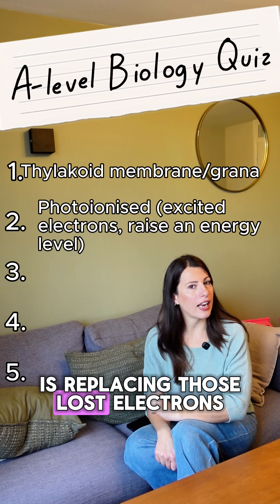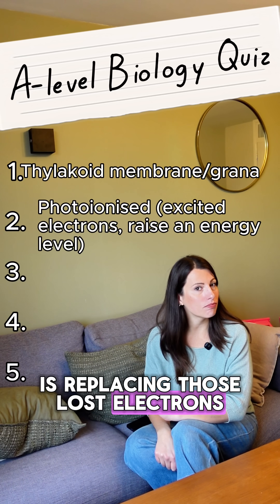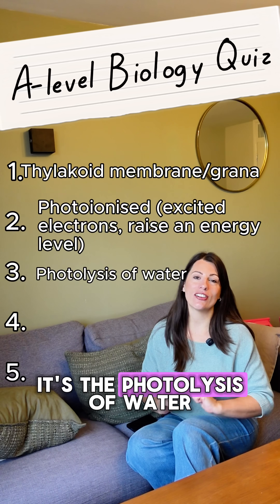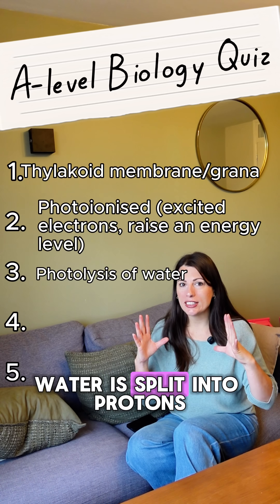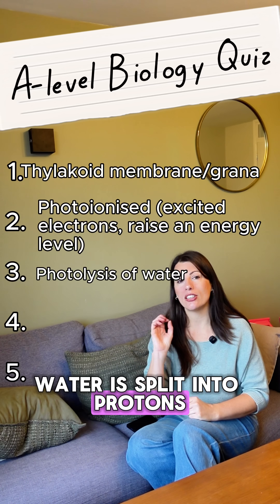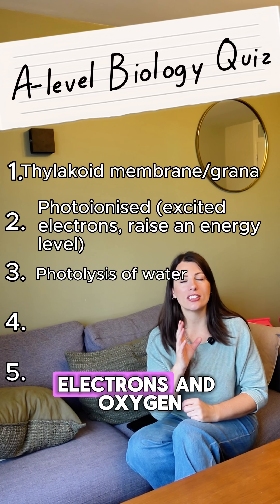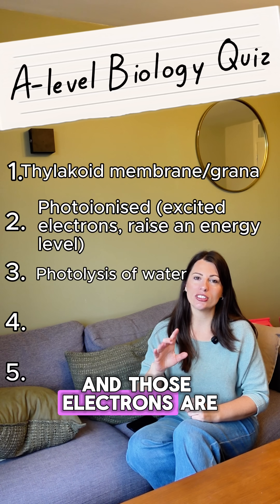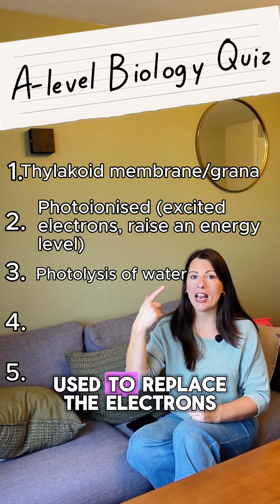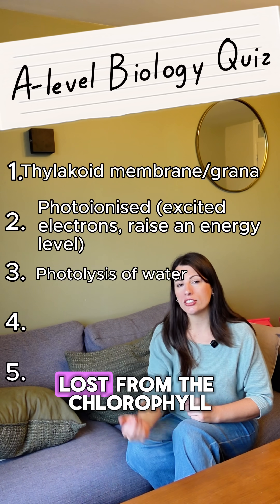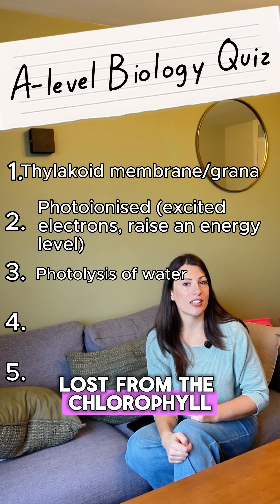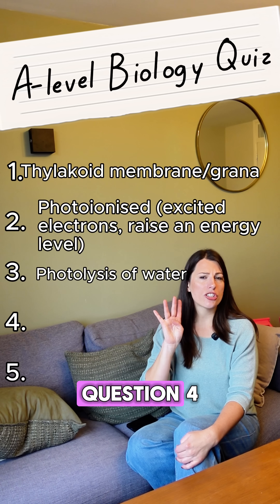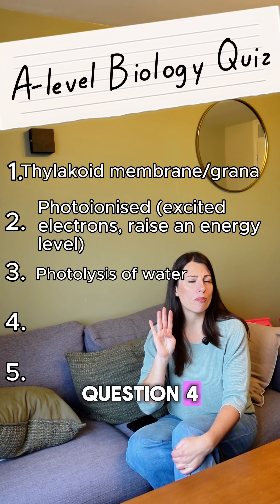The answer is the photolysis of water. Water is split into protons, electrons, and oxygen, and those electrons are used to replace the electrons lost from the chlorophyll in photo-ionization.